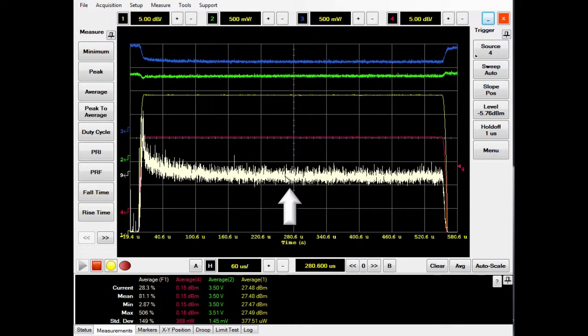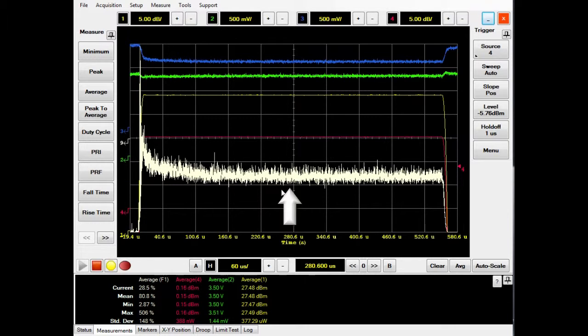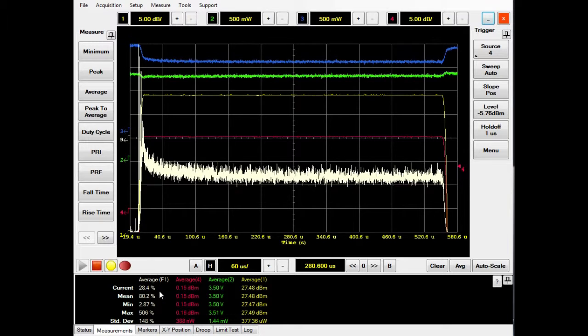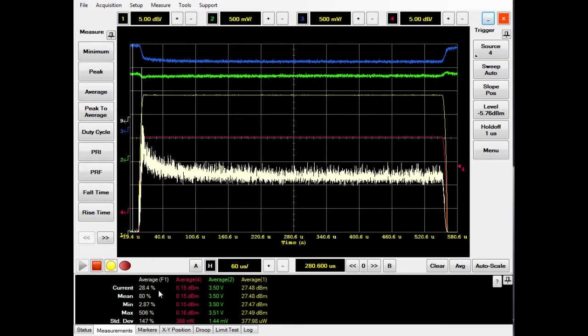The white trace represents the real-time PAE percentage of the power amplifier that we are testing. Any changes to the DC or RF values will be reflected by the white PAE trace.